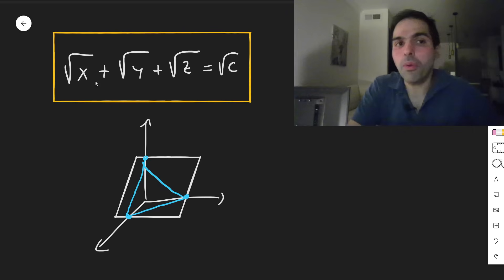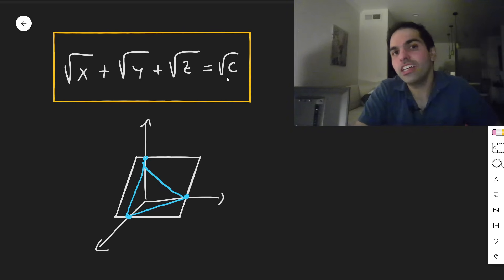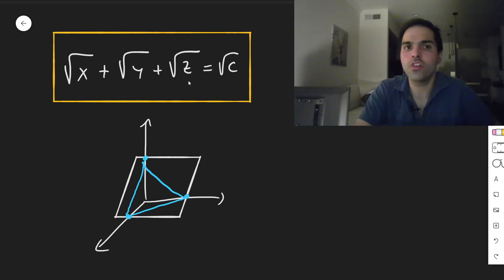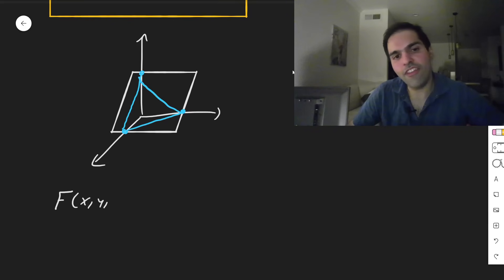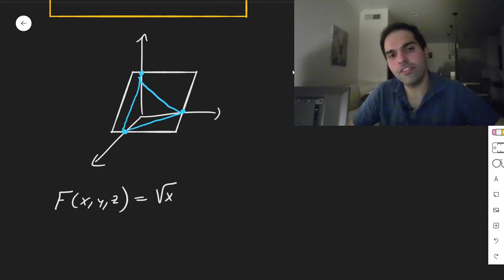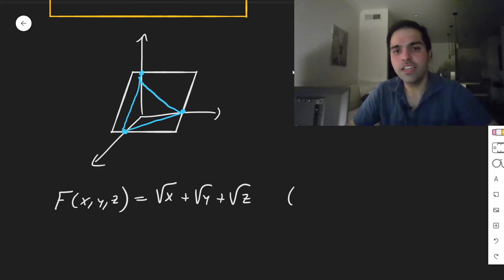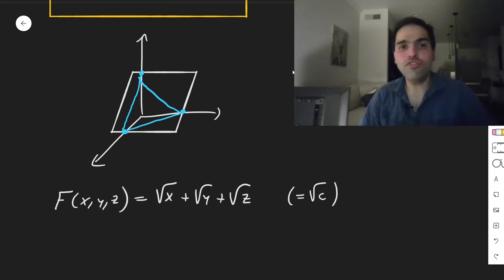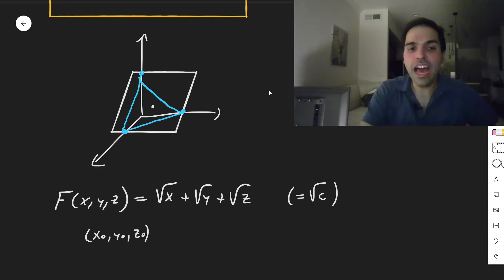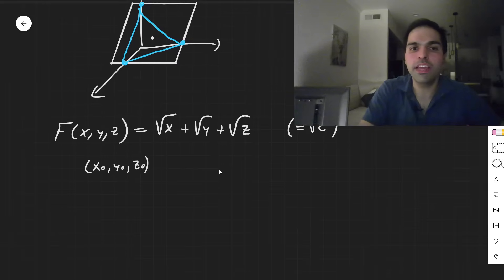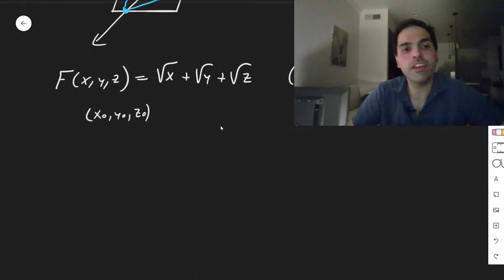Now, to solve this problem, notice this surface is actually a level surface, because this just becomes √x + √y + √z equals a constant. So consider the function f(x, y, z) = √x + √y + √z. The surface is just a level surface, so to find the equation of the tangent plane at any point (x₀, y₀, z₀) on the surface, you just have to use the tangent plane equation for level surfaces.